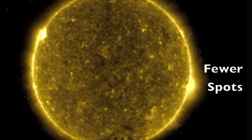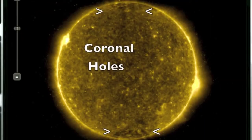During the minimum, there are few sunspots, and therefore generally fewer solar flares. The amount of light the Sun gives off weakens slightly, and the coronal holes are mostly confined to the polar regions.